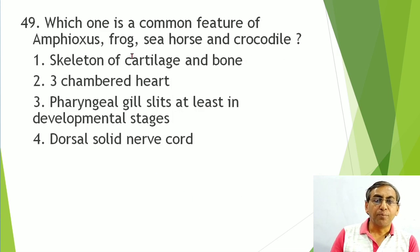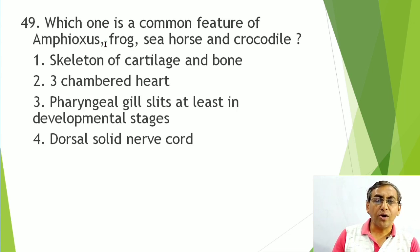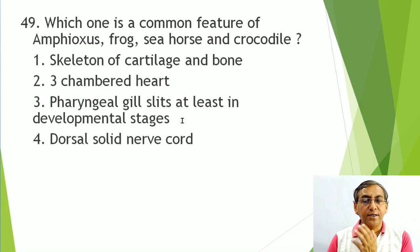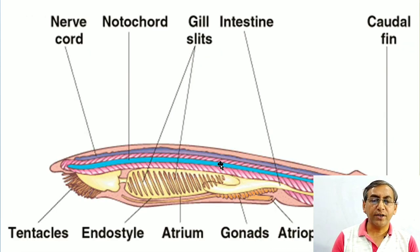Question: common feature of Amphioxus (Cephalochordata), frog (Vertebrata), seahorse (Vertebrata), and crocodile (Vertebrata) — the common feature in all chordates is pharyngeal gill slits, at least in the developmental stage. Illustration: dorsal-most side has the nerve chord, then the notochord below it.